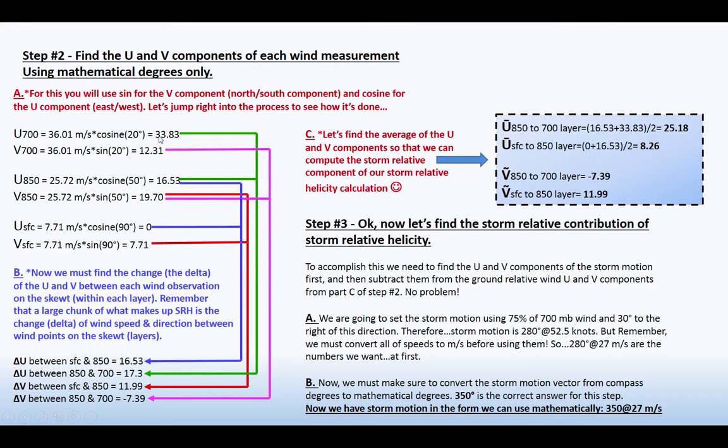So if we subtract 16.53 from 33.83, you just follow the green line on down and that's 17.3. If you subtract 16.53 from 12.31, that's going to give you a negative 7.39. And you just do that for each layer. Now you see, I've got the little tree schematic drawn here. You just follow the examples given.